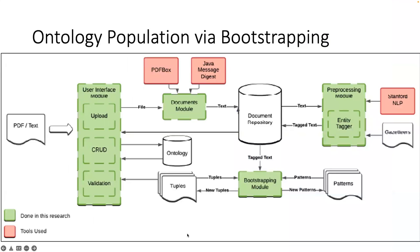Bootstrapping uses the occurrence of seed data and scans a collection of unstructured documents to collect similar data. For example, if the seed data shows 'coral reefs are located in Eastern Australia,' and a document contains the sentence 'coral reefs are found in Eastern Australia,' then we extract 'are found in' as a seed pattern to use for further extraction.